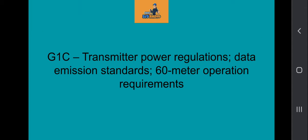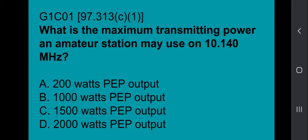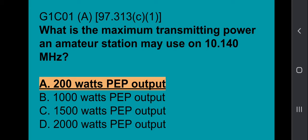G1C covers transmitter power regulations, data emission standards, and 60-meter operation requirements. G1C01: What is the maximum transmitting power an amateur station may use on 10.140 MHz? The correct answer is 200 watts PEP output.